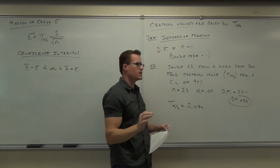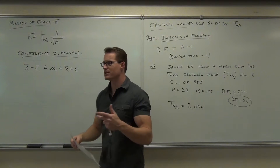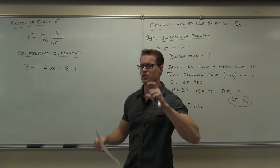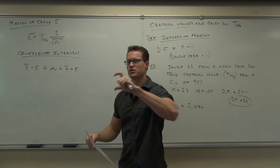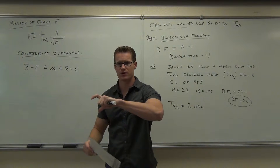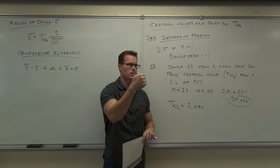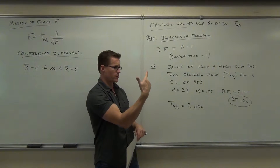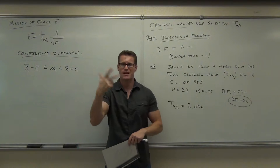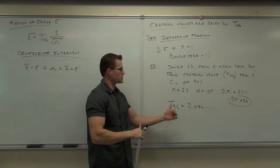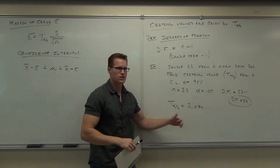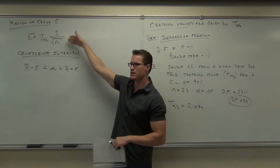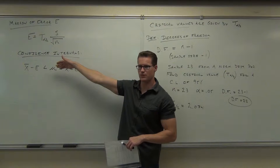So we're going to check those requirements. Sigma's not going to be known. The next thing you do is find your degrees of freedom, because you're going to use that to find your t critical value. One: requirements. Two: look up your degrees of freedom. Three: that's going to let you find your t. And once you find your t, you've got E, you've got your constant.